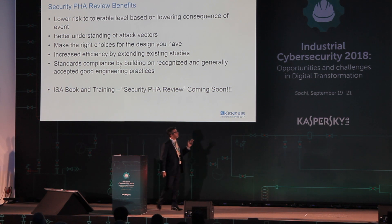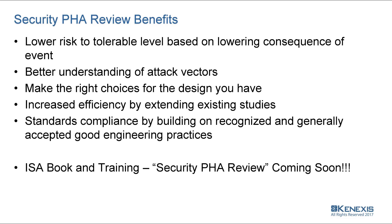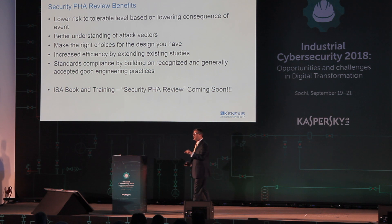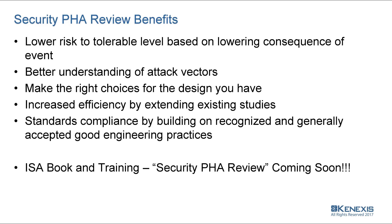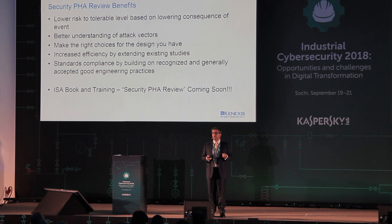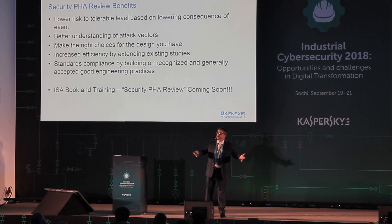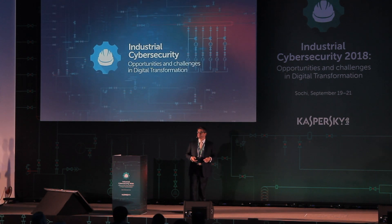The benefits of security PHA review include lowering risk to a tolerable level and achieving a better understanding of attack vectors. When you can go through a process risk analysis and tell management exactly what scenario you're trying to prevent, you have concrete information and you're much more likely to get funding for cybersecurity. Additional benefits include making the right choices, increased efficiency, and standards compliance. ISA is going to be releasing a book called Security PHA Review later this fall, along with a training class. Thank you for your time.